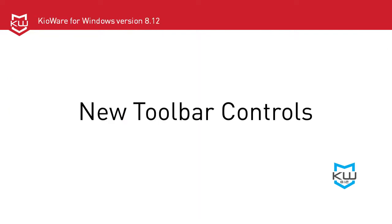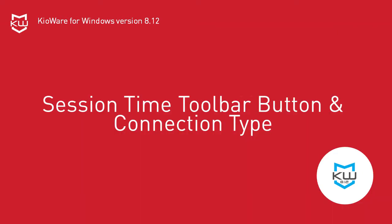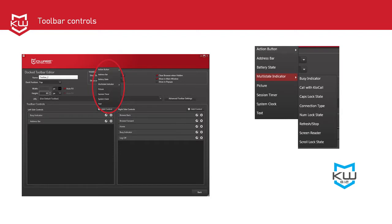New toolbar controls have been added to allow for configuring the custom KeyWare toolbar to show date and or time. A new toolbar control has also been added to indicate connection type. There is also a new toolbar option that accompanies the time-limited session feature. Add custom toolbars in the User Interface tab.